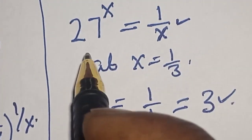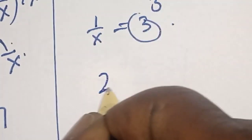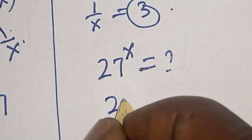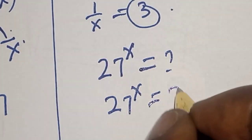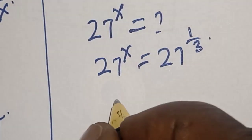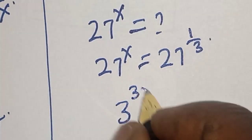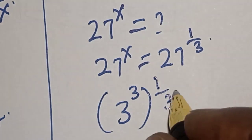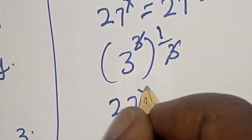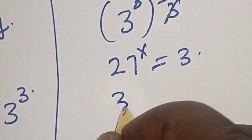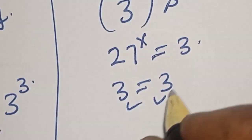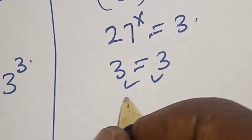Also, let's consider the left-hand side. 27 raised to power x is equal to 27 raised to power 1 divided by 3. But 27 is the same as 3 raised to power 3, raised to power 1 divided by 3. This will cancel, giving 27 raised to power x is equal to 3. Therefore the left-hand side, 3, is equal to the right-hand side, 3, which satisfies our given equation at x equal to 1 divided by 3.